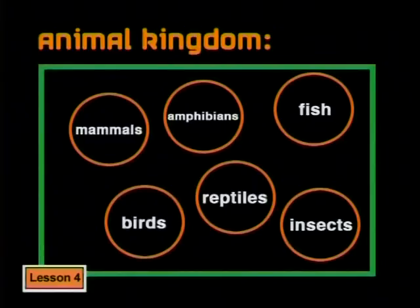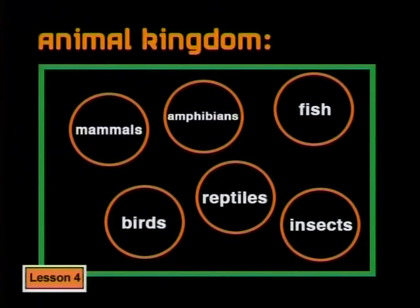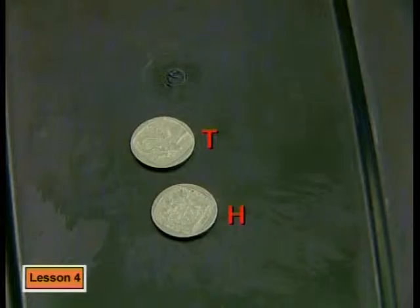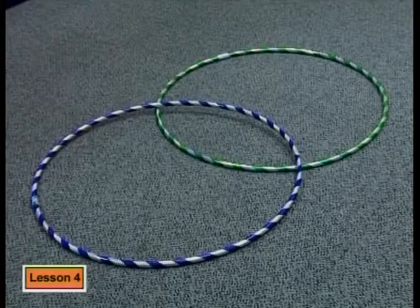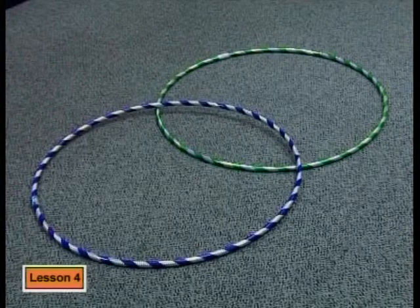So far we've only discussed situations in which something can only belong to one subset. For example, a lion belongs to the subset of mammals — it cannot belong to the subset of birds or the subset of reptiles. And when we flip a coin, it can only land on heads or tails; it cannot possibly land on both at the same time. But sometimes an event can fall into more than one subset. Let's go back to the hula hoops and the bean bag to see how this can happen.